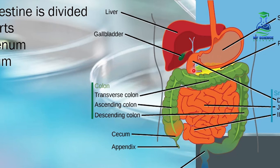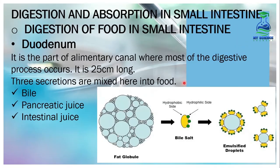The maximum digestion of food takes place in the small intestine. Three secretions are mixed here into the food: number one is bile, number two is pancreatic juice, and number three is the intestinal juice.